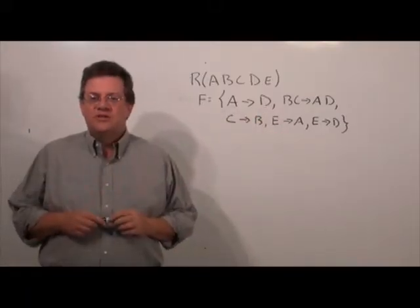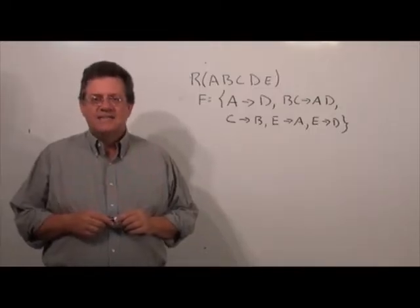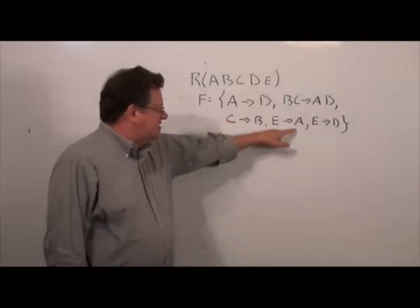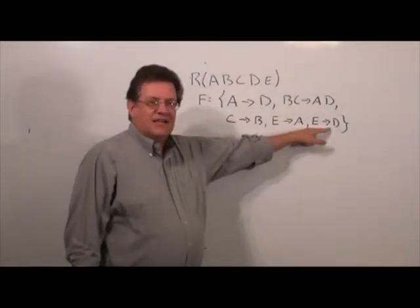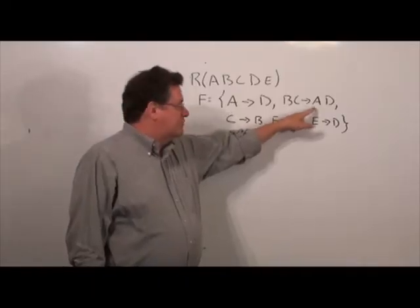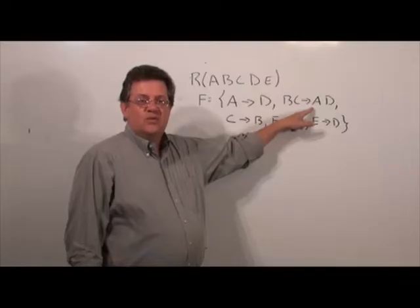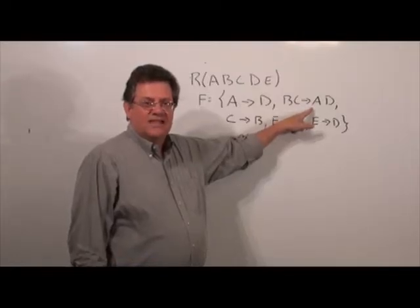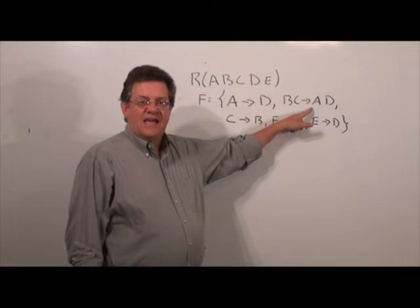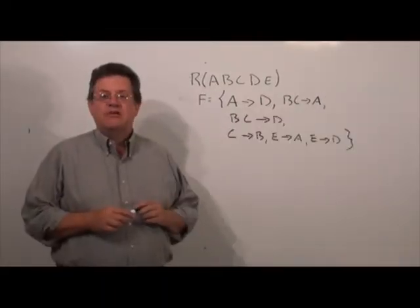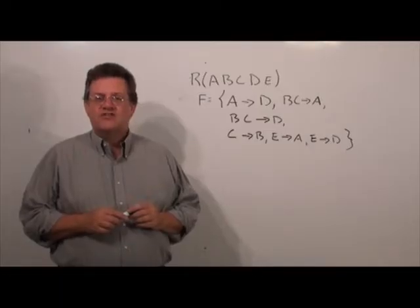The first thing we want to do is make sure that all functional dependencies have singleton right-hand sides. Looking at them, most have singleton right-hand sides, but B C → A D does not. So by decomposition, we break it down to B C → A and B C → D. I rewrote the functional dependencies so that all of them now have singleton right-hand sides.